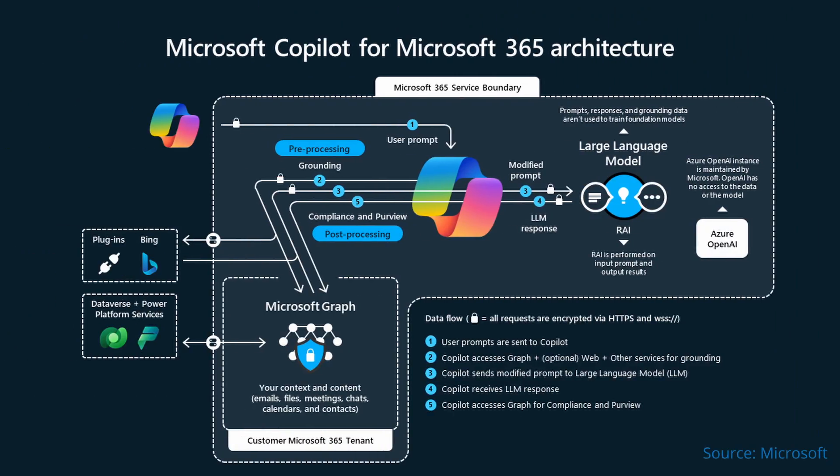When you make a request to Copilot, before your prompt ever reaches the AI model, it's enriched using appropriate contextual information based on those graph indexes. But depending on where you make that request, that context can change. And not all Copilot experiences, at least not for now, are created equally in this regard.